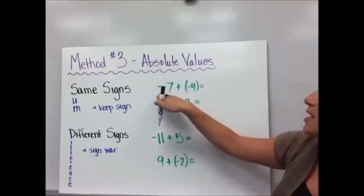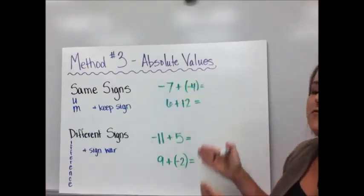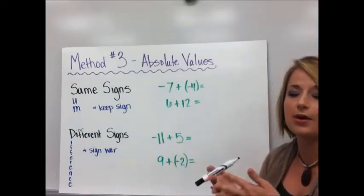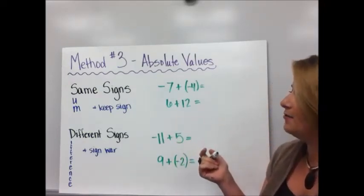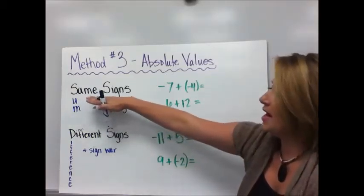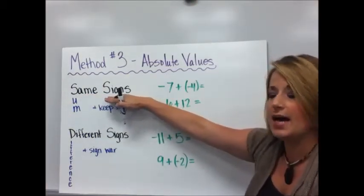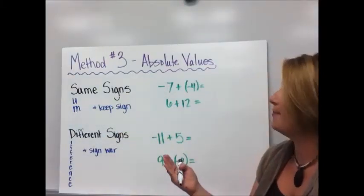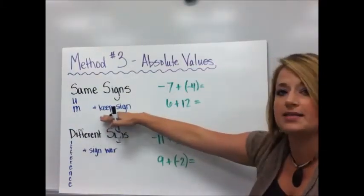If I were to draw that out with counters, seven negative counters and four negative counters, nothing is going to cancel out. So they're all going to come together. And then my answer would be negative. So this is kind of an organizer for you. If they have the same sign, you do the sum of their absolute value. You add their absolute values. And then you're going to keep that sign.